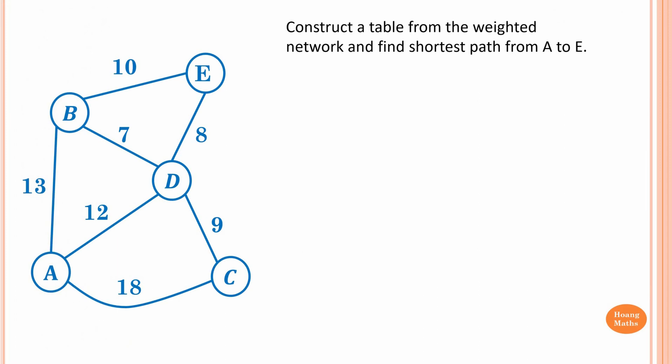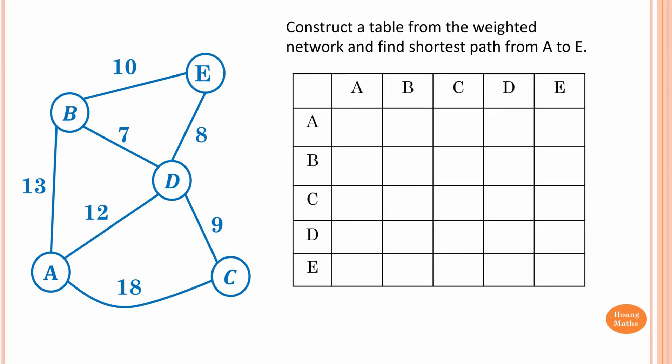Please stop the video and try this one yourself. First, we need to draw a table. Looking at the network, write down the weightings. From A to A is zero — leave it blank. From A to B is 13. From A to C, the weighting is 18. A to D is 12. There is no direct connection between A and E, so leave it blank.